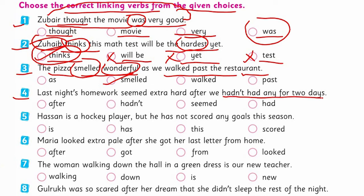The fourth one: 'Last night's homework seemed extra hard — we hadn't had any for two days.' 'Last night's homework' is the noun, and 'hard' is the adjective. What is connecting them? 'Seemed' is the linking verb here. We have discussed it, so 'seemed' is a very appropriate option.